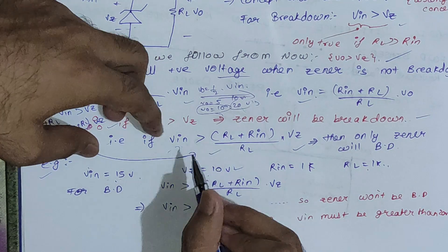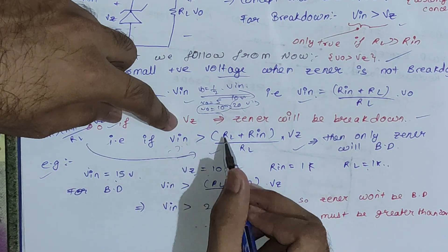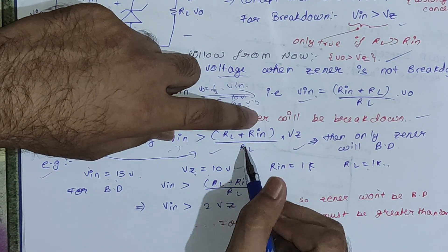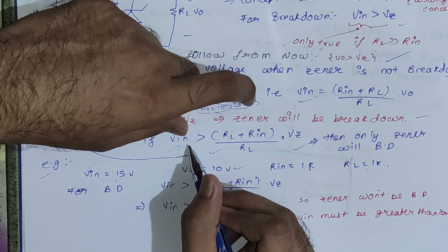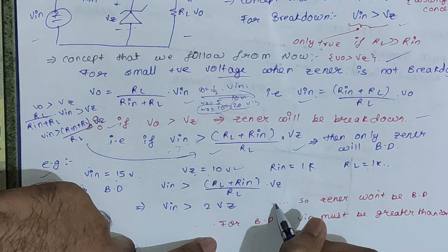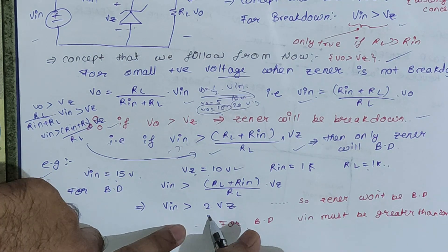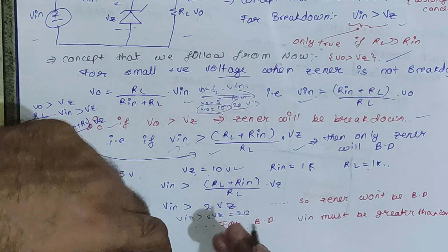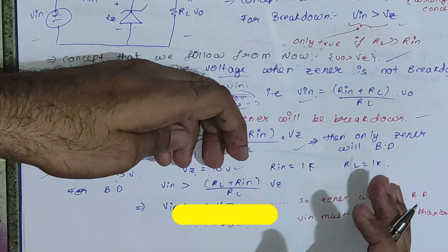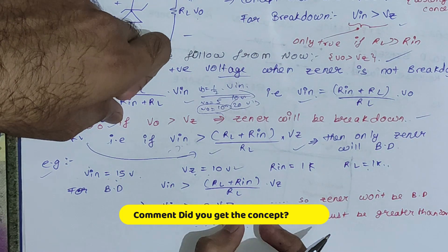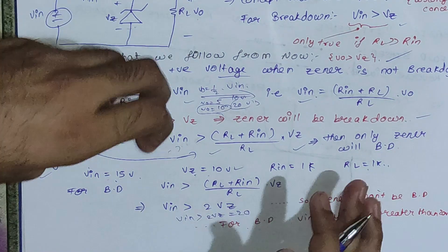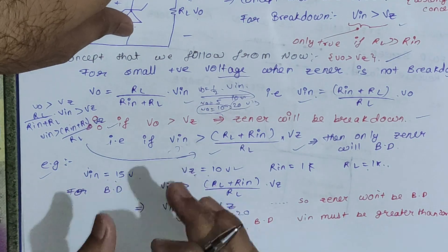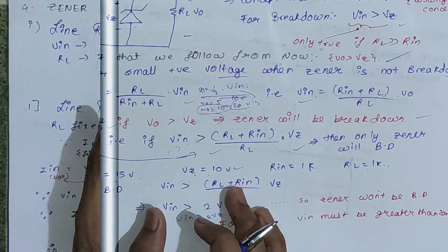We can verify this using the other equation. For breakdown, Vin > ((RL + Rin) / RL) × Vz = ((1+1)/1) × Vz = 2Vz = 20V. So only if Vin > 20V will the Zener break down. Since Vin = 15V < 20V, Zener is not in breakdown. If instead Vin = 22V, then the Zener would break down.